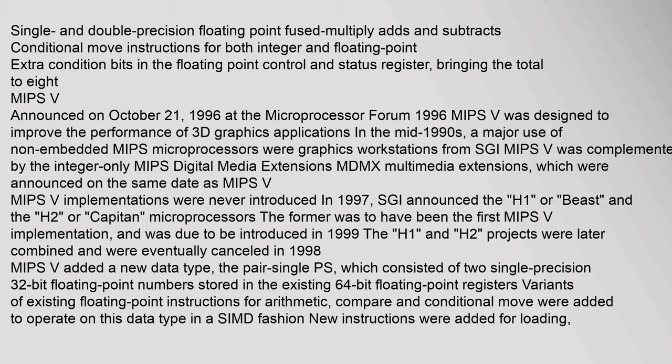MIPS-IV also added single and double precision floating-point fused multiply-adds and subtracts, conditional move instructions for both integer and floating-point, and extra condition bits in the floating-point control and status register, bringing the total to eight. MIPS-V was announced on October 21, 1996 at the Microprocessor Forum, designed to improve the performance of 3D graphics applications. MIPS-V was complemented by the integer-only MIPS digital media extensions MDM-X, announced on the same date.